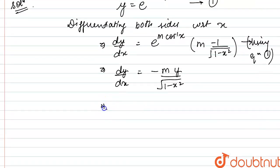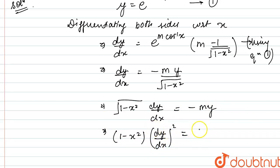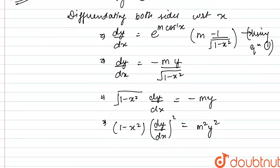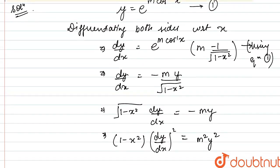On cross multiplying, root of 1 minus x square into dy/dx equals minus m·y. Now squaring both sides, we get 1 minus x square into (dy/dx)² equals m² times y² — the negatives cancel on squaring to give a positive.